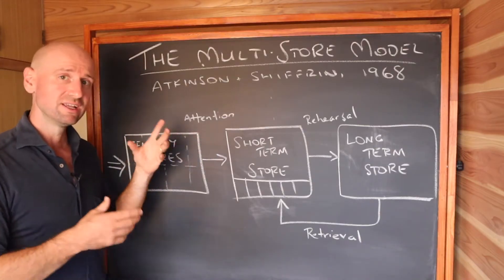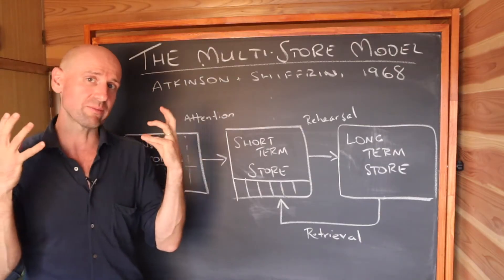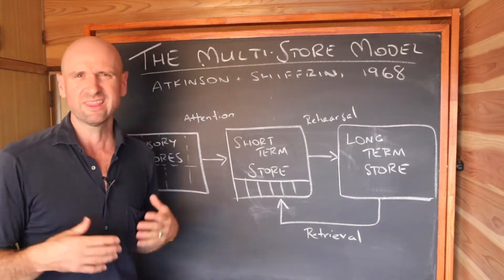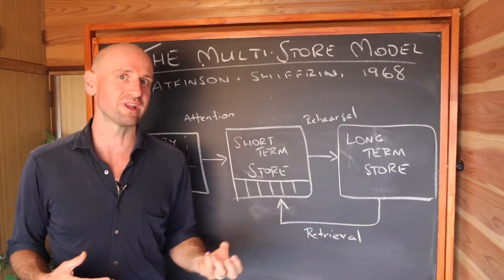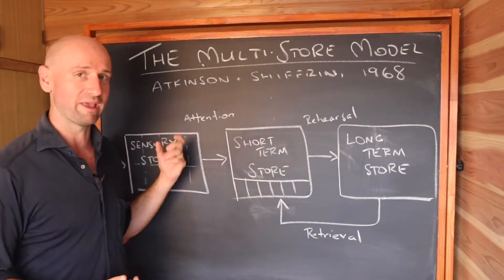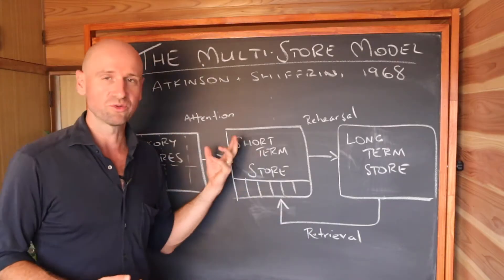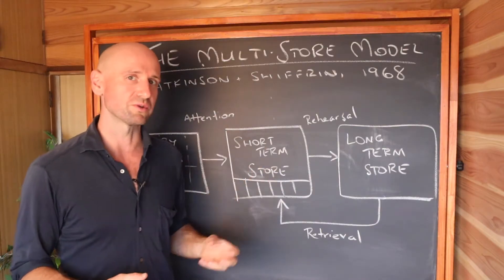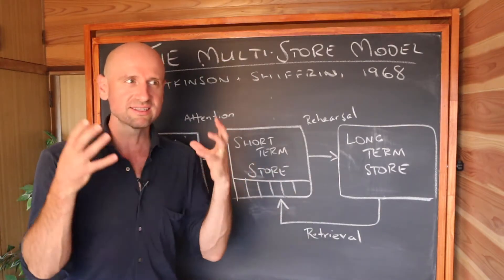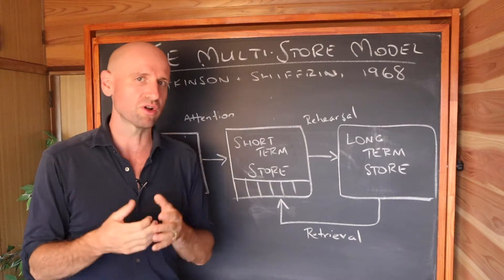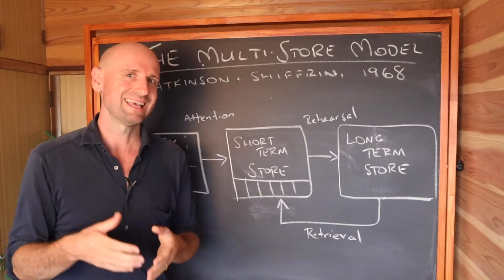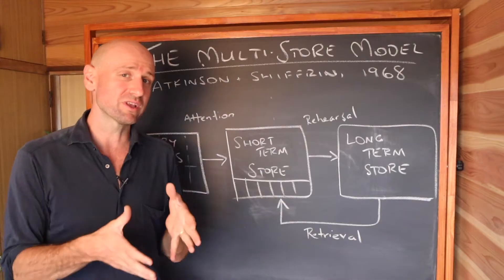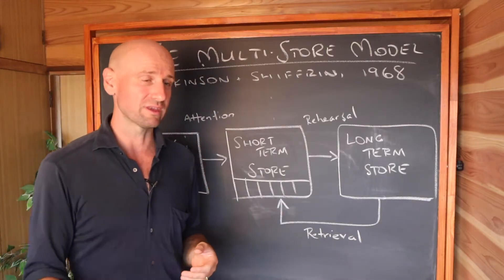Now, if you pay attention to the information coming through your senses, it's going to transfer into your short-term store. If you suddenly tuned out from the sound of my voice and stopped paying attention, you're not going to be focusing on what I'm saying and you're not going to remember it. The short-term store is your working memory — the small amount of information you can hold in your mind at any one time. It lasts about 15 to 30 seconds, and we can only focus on a few things.